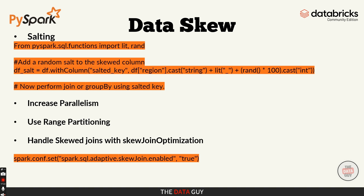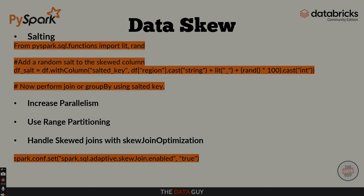That wraps up our deep dive into optimizing Spark performance. In this video we covered some powerful techniques to supercharge your Spark jobs: partitioning and coalesce — how to manage partitions to balance data and avoid unnecessary shuffles; caching and persisting — how to reuse data efficiently across multiple actions, reducing computation time; broadcast joins — how broadcasting smaller data frames can eliminate costly shuffles when performing joins; and handling data skew — how to distribute data evenly to ensure your Spark job runs smoothly. By applying these techniques, you can significantly improve the performance of your Spark jobs, saving time and resources.